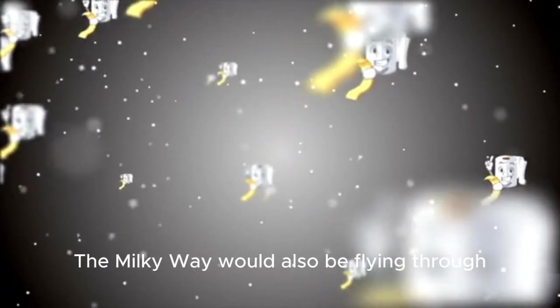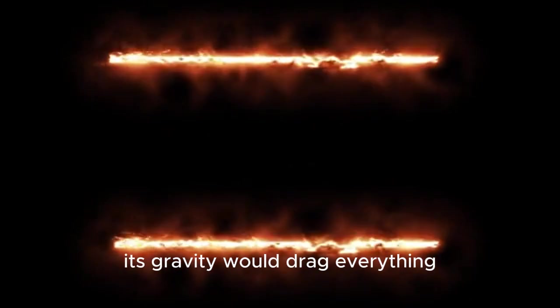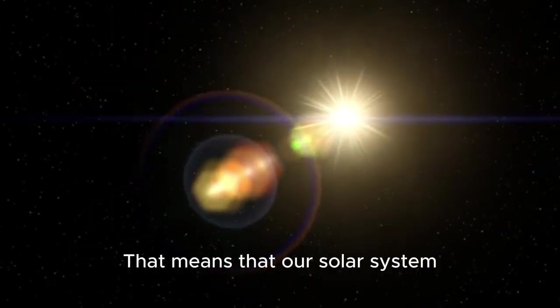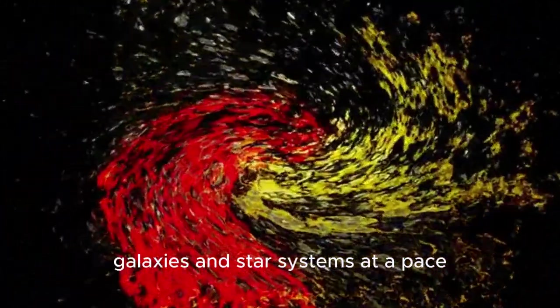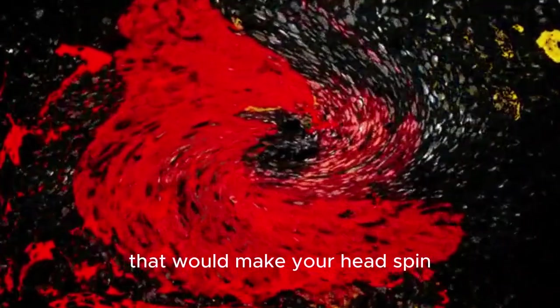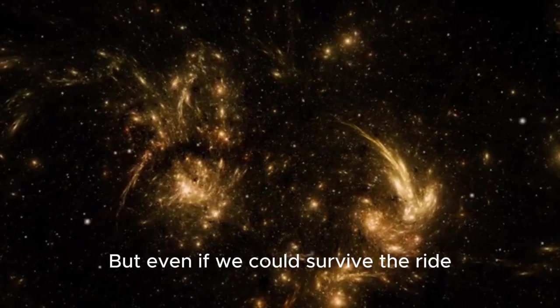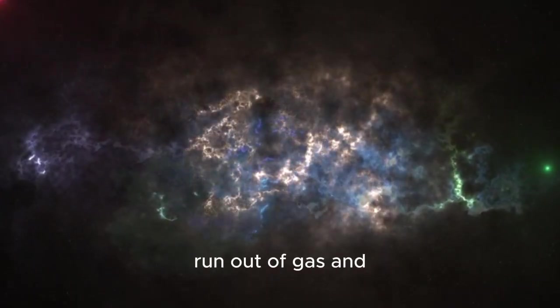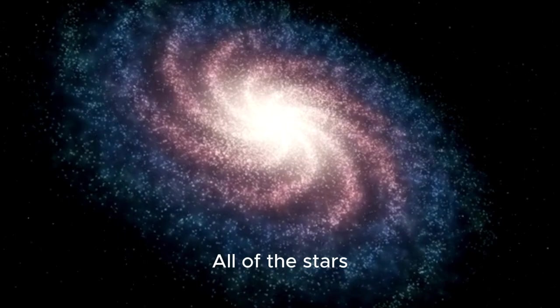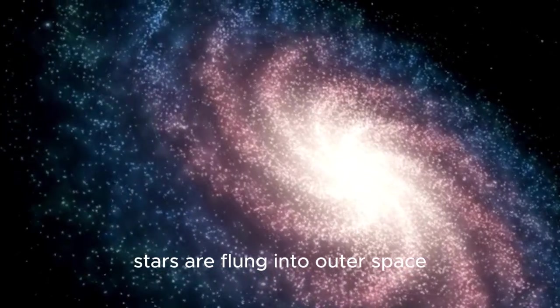But that's not all. The Milky Way would also be flying through space much faster than it does now. Because the black hole would have so much mass, its gravity would drag everything along with it. That means that our solar system would be flying through space at crazy speeds. We'd be whizzing past other galaxies and star systems at a pace that would make your head spin. It would be like being on a roller coaster that never ends. But even if we could survive the ride, we wouldn't be able to last for very long. The Milky Way would eventually run out of gas, and then there would be no more stars being born. All of the stars would just slowly drift apart until the galaxy breaks apart and all of the stars are flung into outer space.